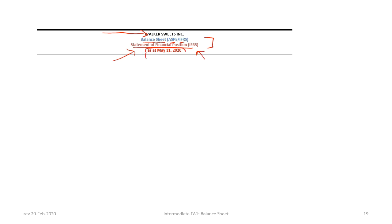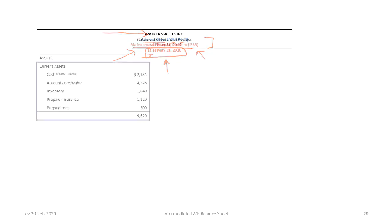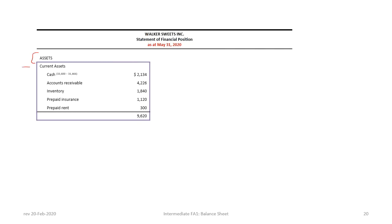Note that whereas the statement of income covers a period, the balance sheet or statement of financial position is a snapshot in time, so the correct terminology is 'as at May 31st, 2020.' Once we have our title, we proceed with the asset side. We present current assets in order of liquidity, from most liquid to least liquid. There is also the alternative to present in reverse order of liquidity under IFRS.